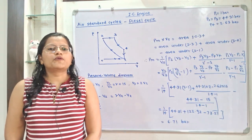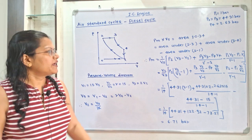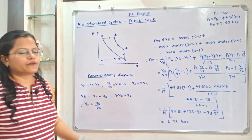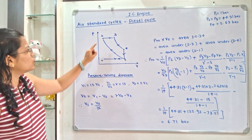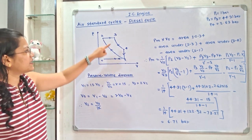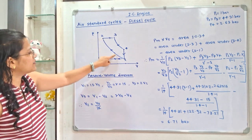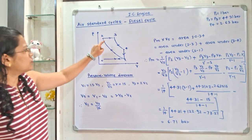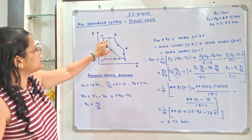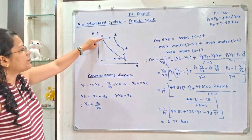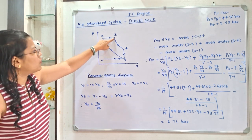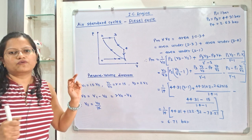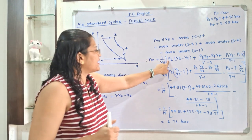Work output equals mean effective pressure multiplied by swept volume, which equals the area under process 1-2-3-4 on the P-V diagram. This area equals the area under process 2 to 3, plus the area under process 3 to 4, minus the area under process 2 to 1. Area under process 2 to 3 is a constant pressure process, so it equals P2 × (V3 − V2).